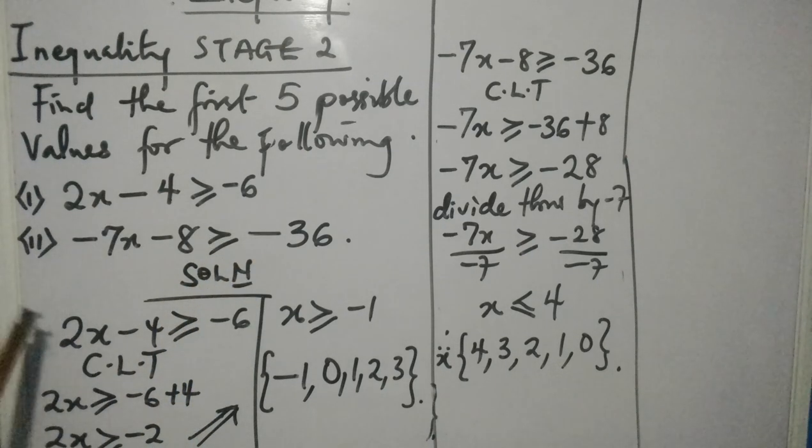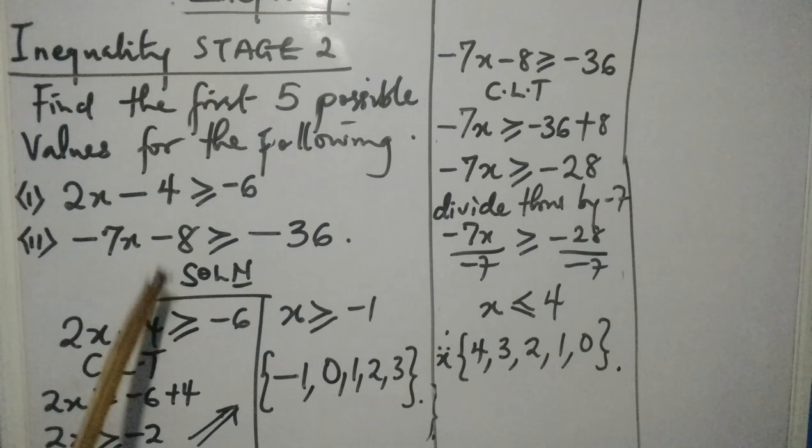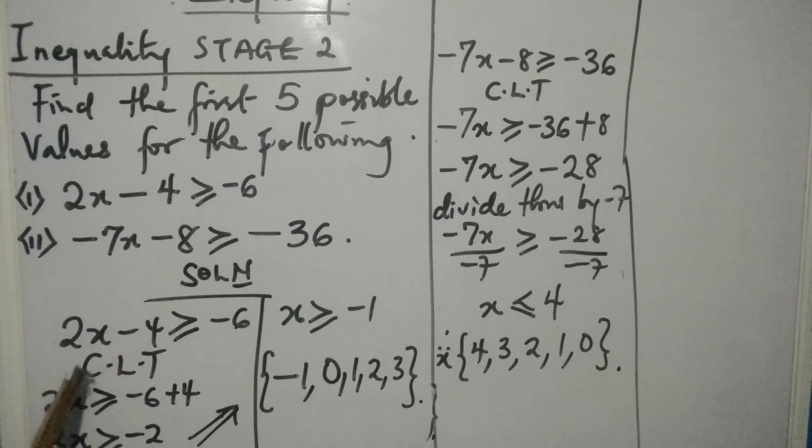So we start off with the first question: 2x minus 4 greater than or equal to -6. Collect like terms. These are the like terms - let them be on one side of the inequality. So 2x will be left there.